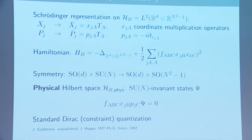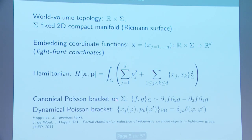The constraint amounts to the standard direct constraint quantization procedure: we look for states that solve those constraints on the quantum side. There is a question of whether this is a first-class or second-class constraint at this point — it could be second class, and the details are probably written in the relevant paper.